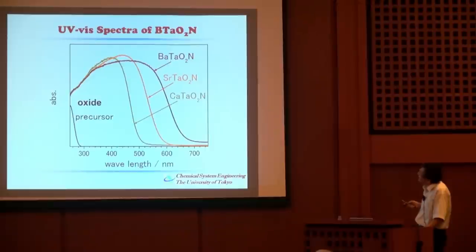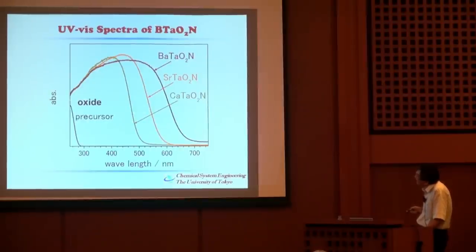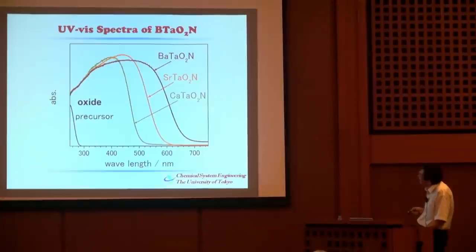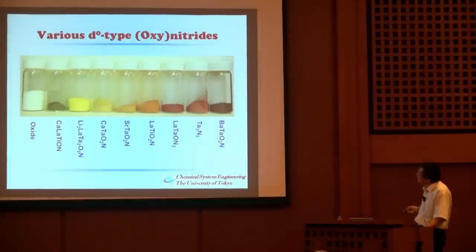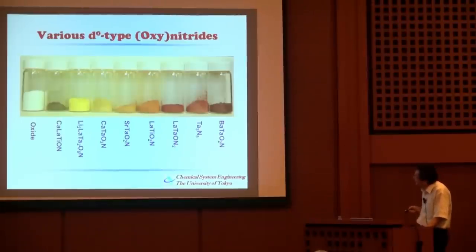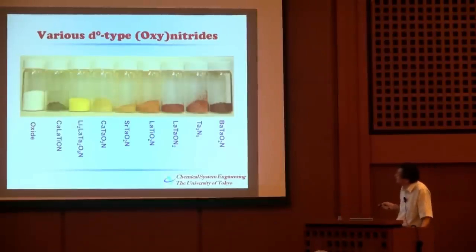We synthesized a series of alkaline-metal-containing tantalum oxynitrides. UV-visible spectra show the precursor oxide has no visible-light absorption, but once nitrogen is introduced into the tantalum coordination sphere, good visible-light absorption is obtained. For barium tantalum oxynitride the absorption edge exceeds 600 nm. Photographs confirm all these materials are colored — they absorb visible light photons — whereas the precursor oxide is white.